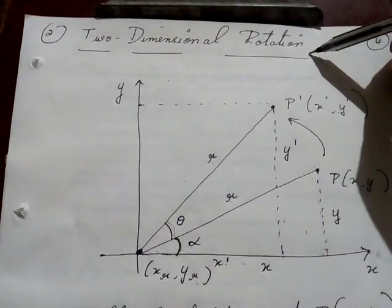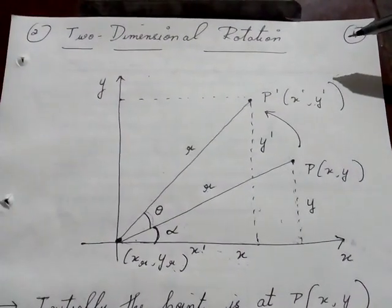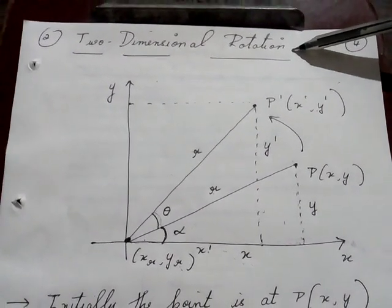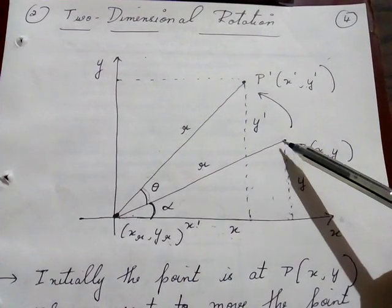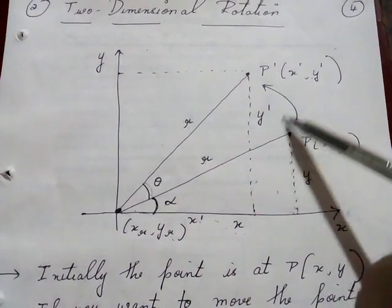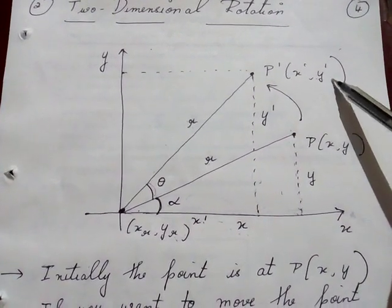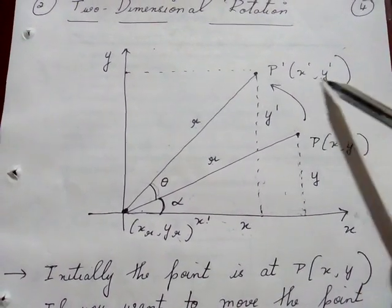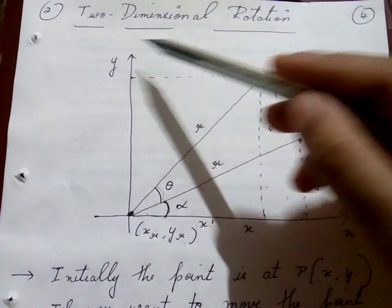The next topic we are discussing today is two-dimensional rotation. In the last class we had seen what is two-dimensional translation, and in this class we'll be seeing what is two-dimensional rotation. That means you are rotating a point at a particular angle. The given point P is (x, y), and after rotation the new point will be P' (x', y').